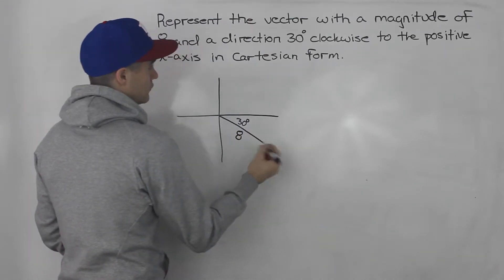And we have to represent it in Cartesian form, meaning that we have to represent it as x, y, where the tail is at the origin, 0, 0, and the head is going to be at x and y.